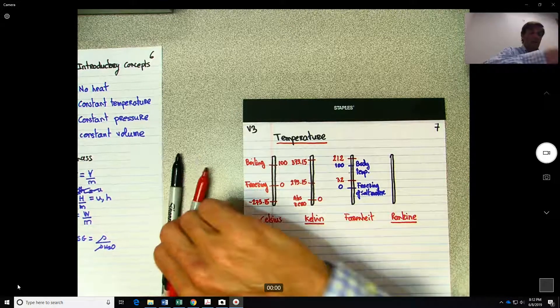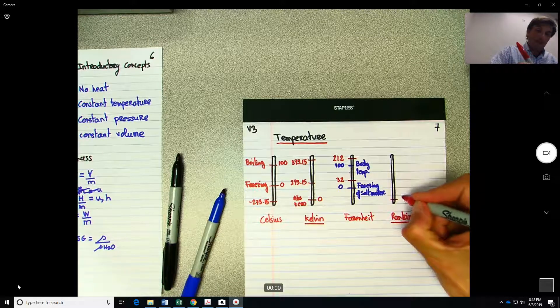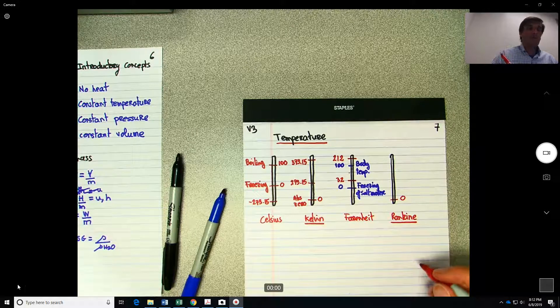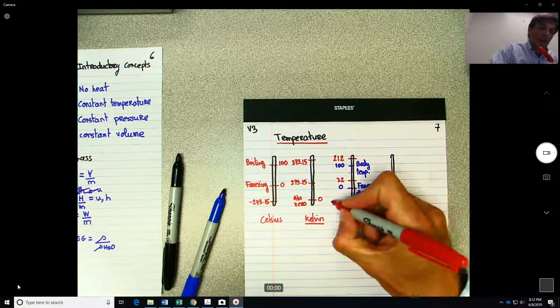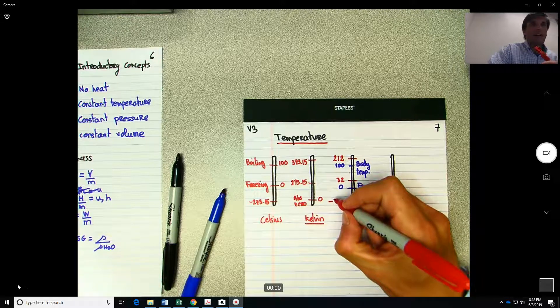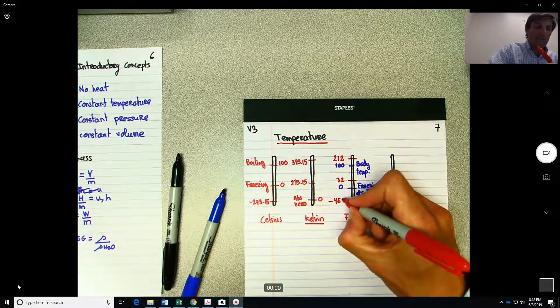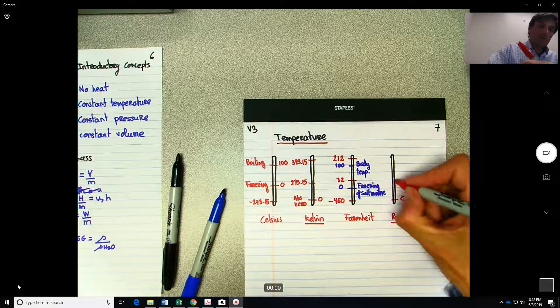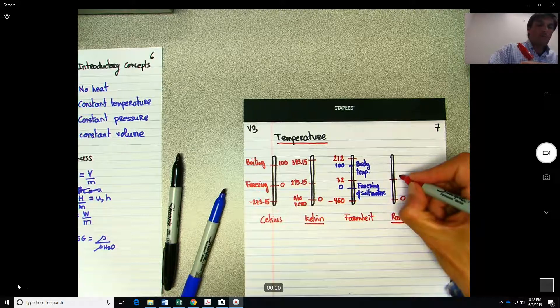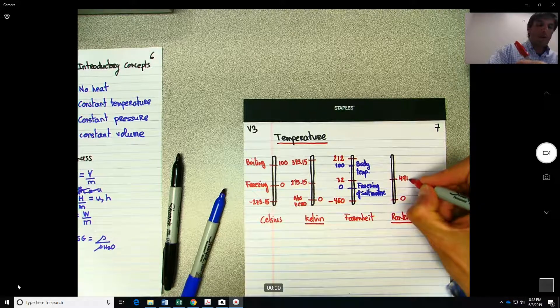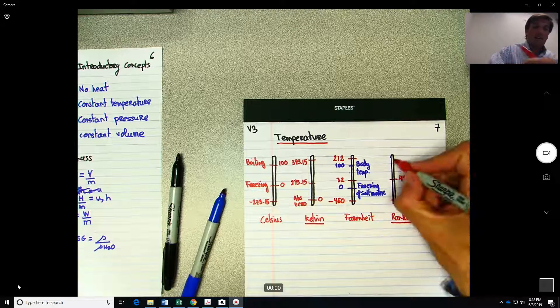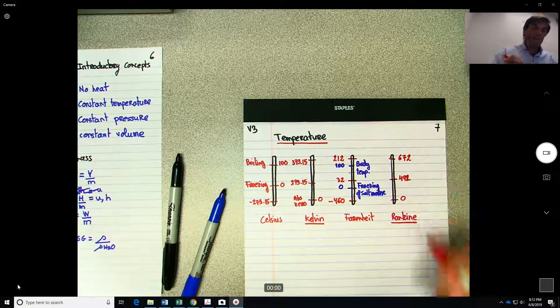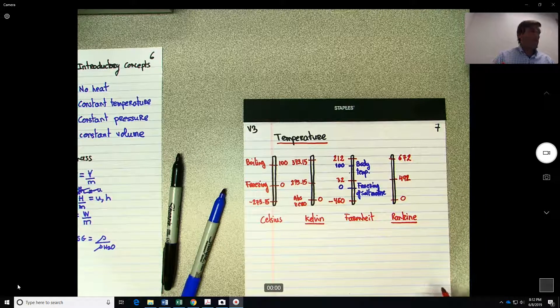And then the same thing, the Rankine has the setup at the absolute zero. And the absolute zero for the Fahrenheit would be negative 460. So here we have 491 or 492, we simplify. And then the boiling will be about 672.